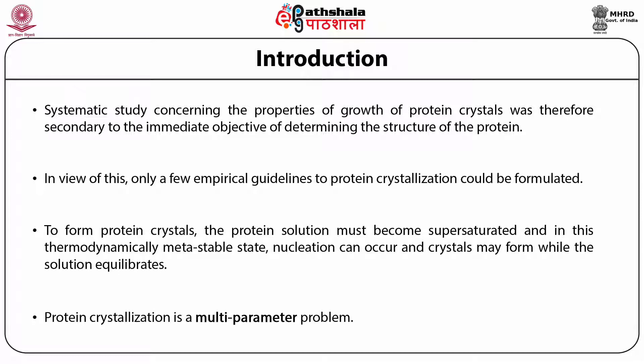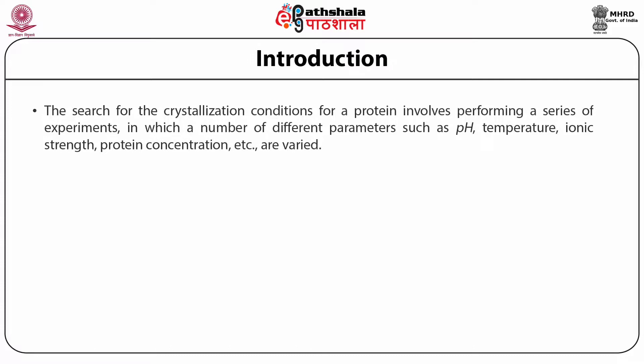Protein crystallization is a multi-parameter problem. This is the most important distinction between small molecular crystallization and macromolecular crystallization. Usually in small molecules, you get crystals by using slow evaporation when you have the compound mixed with a proper solvent. But here it is a multi-parameter problem. The search for crystallization conditions involves performing a series of experiments in which a number of different parameters such as pH, temperature, ionic strength, protein concentration, etc. are varied.